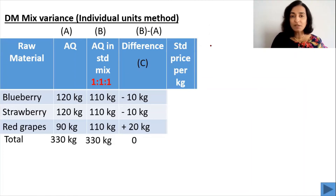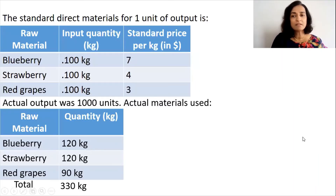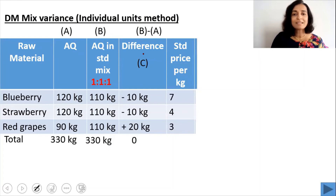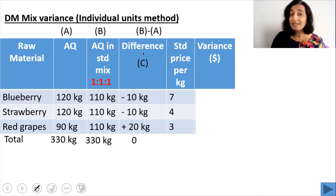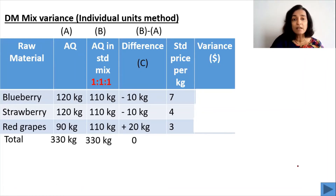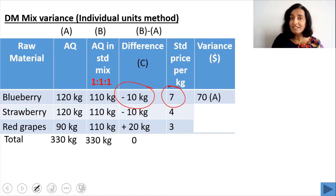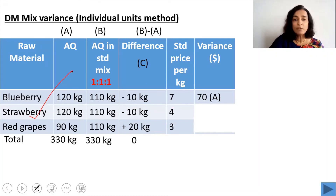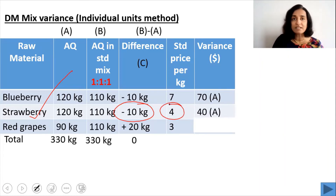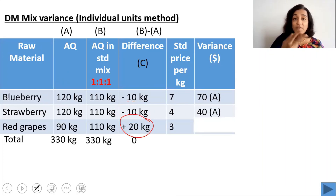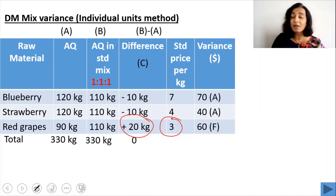The standard price per kg from the question is $7, $4, and $3. Converting the differences to dollar values: blueberry — 10 kg extra at $7 gives $70 adverse. Strawberry — 10 kg extra at $4 gives $40 adverse. Red grapes — 20 kg less used at $3 gives $60 favorable.